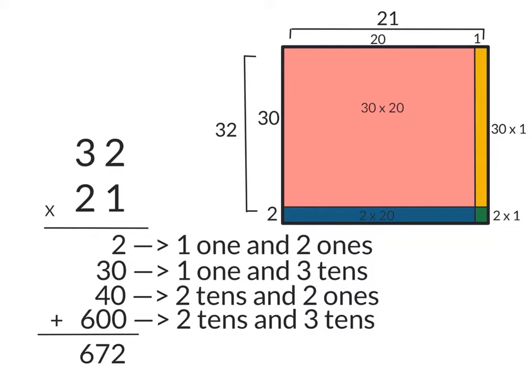Now that we know how numbers are decomposed and what they're made of, we can use this knowledge to use the partial products method to multiply.